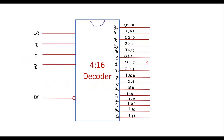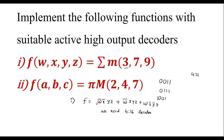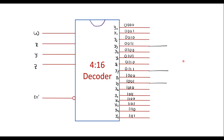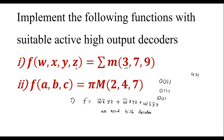Outputs Y3, Y7, and Y9 are selected. We can observe that this is a canonical SOP form. To get the canonical SOP form, we need an OR gate to connect these product terms. So outputs Y3, Y7, and Y9 are connected to a 3-input OR gate, and the output is F.